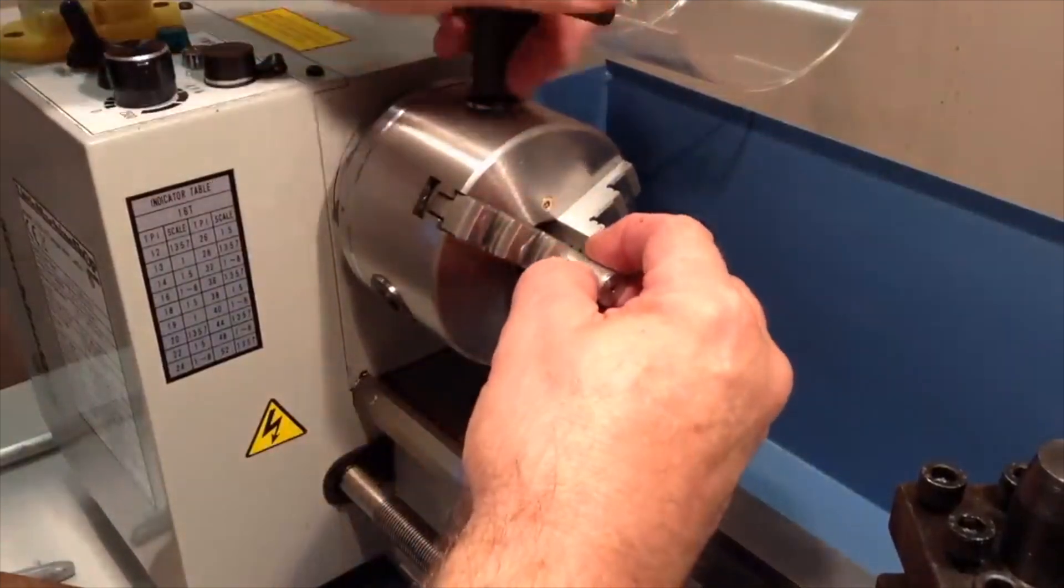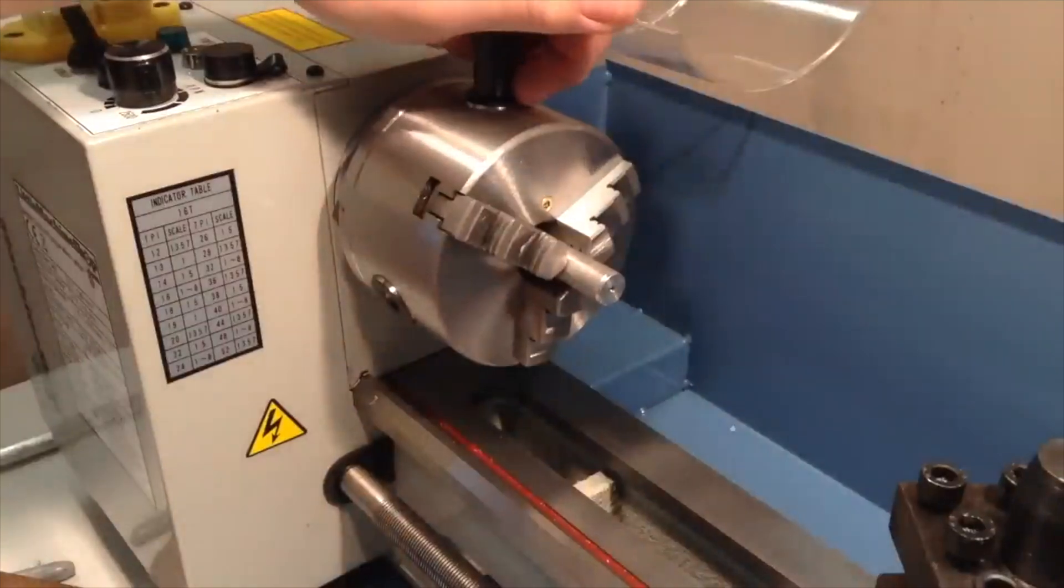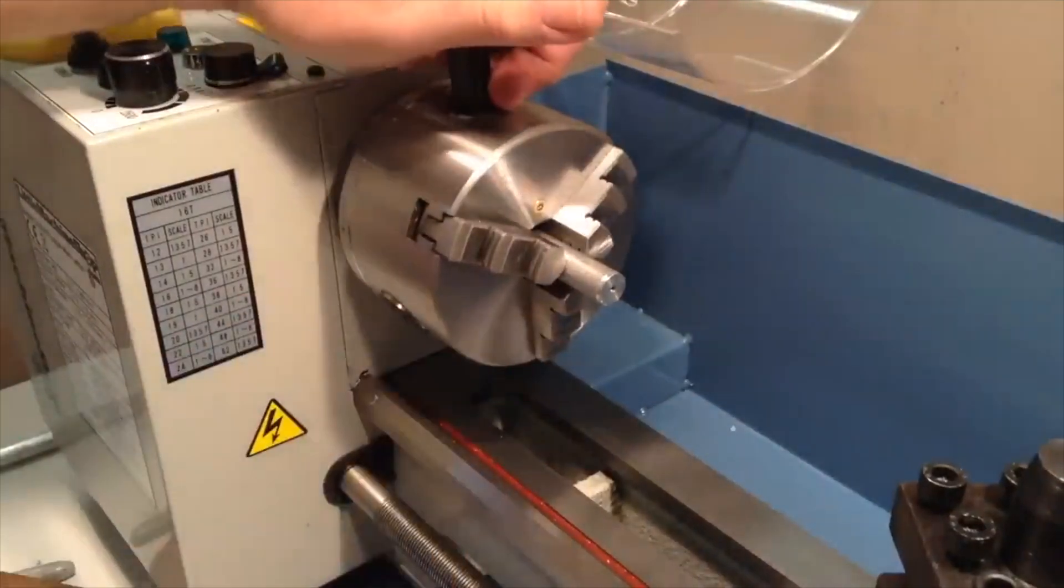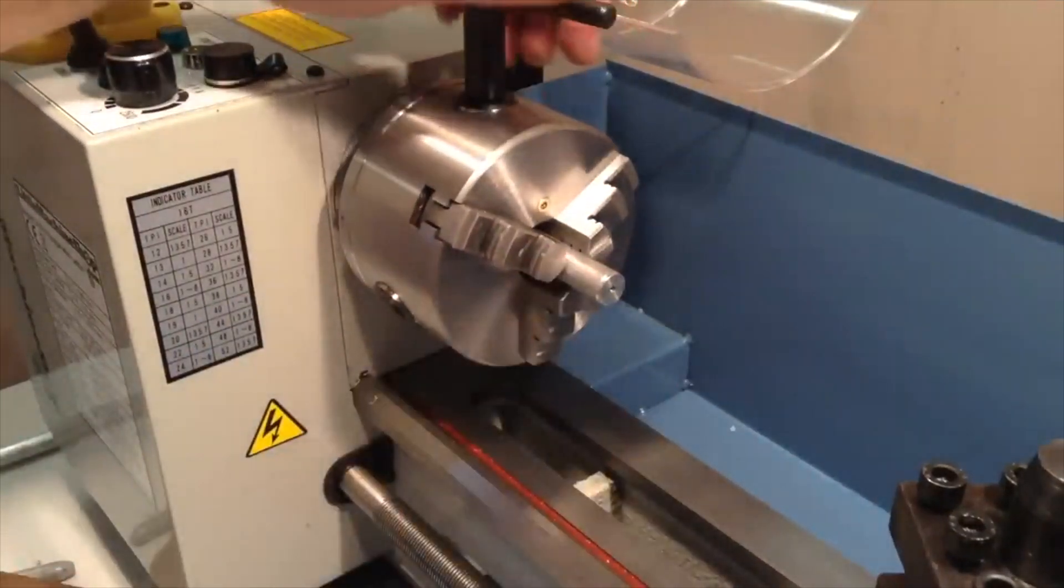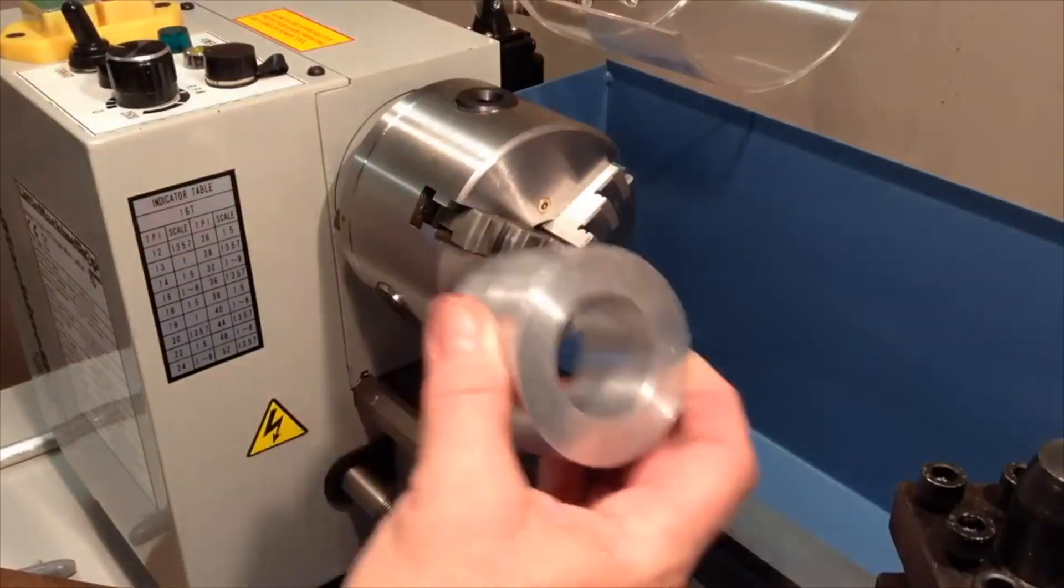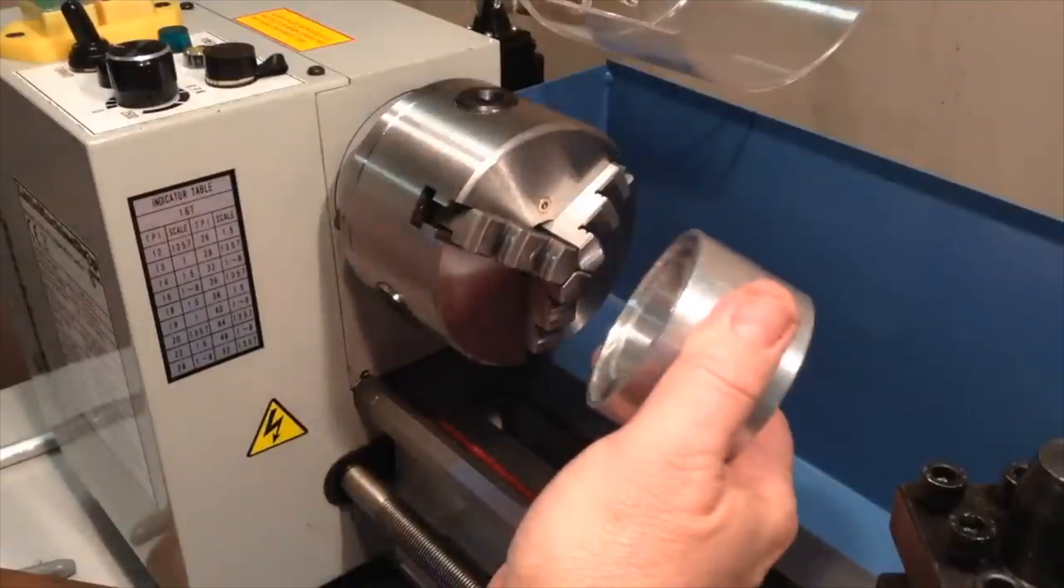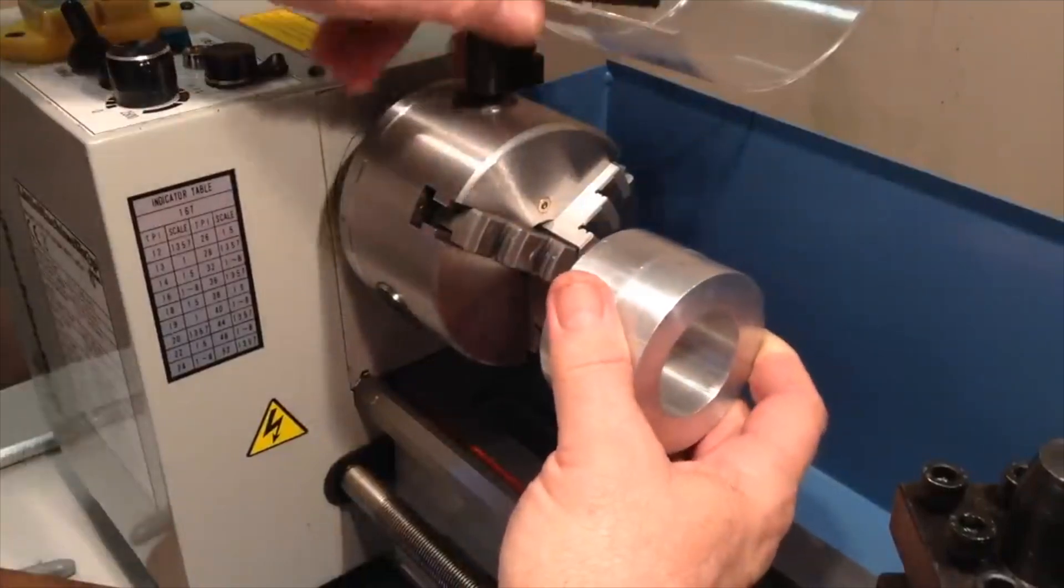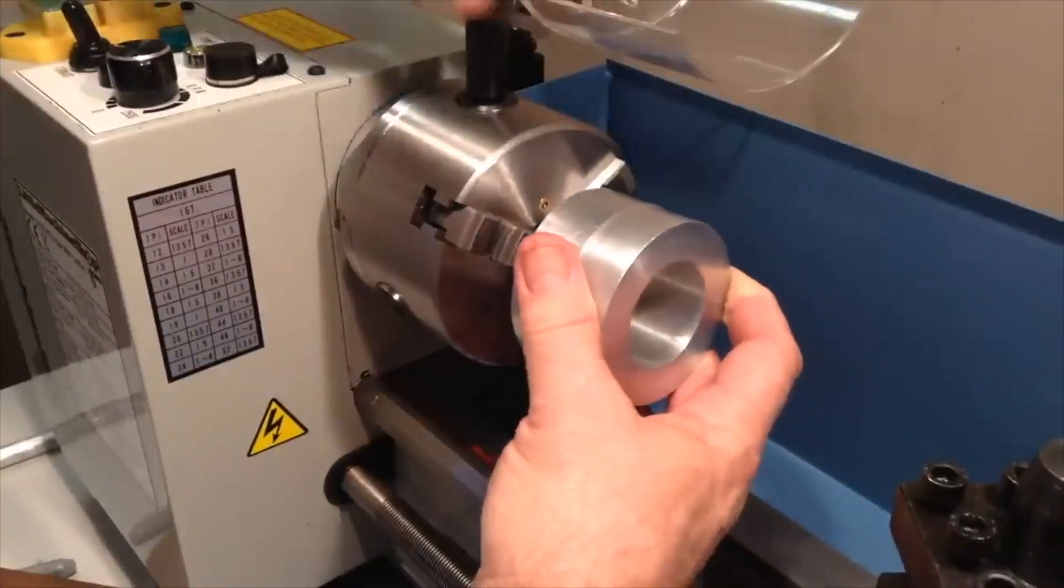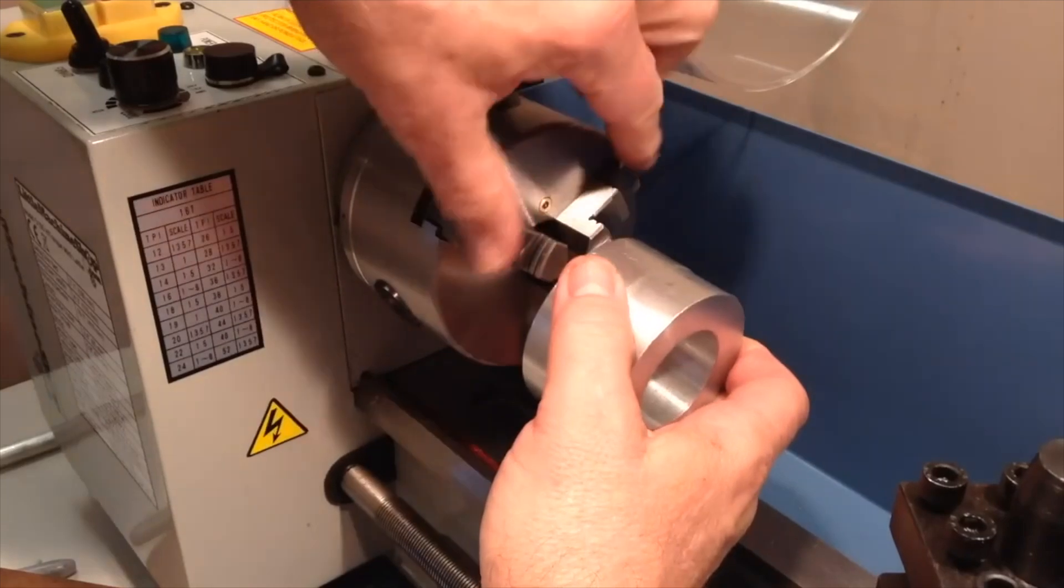As you can see it grips the outer surface of the work. Now you can also grip the inner surface and let me find a different work piece and I'll show you that. Sometimes you'll have a sort of a donut shape work piece like this and it's too large to grip with the jaws.